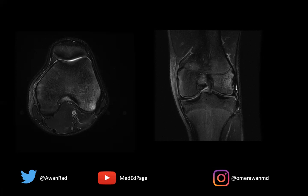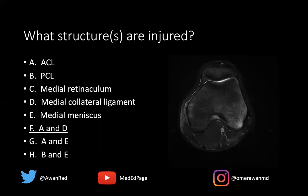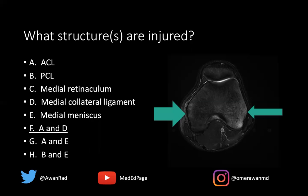You should immediately recognize that this is a clip injury, and the ACL and the medial collateral ligament are going to be torn or injured. So the best answer here is F — the ACL and the medial collateral ligament. These are nice examples of microtrabecular contusions, which are essentially microtrabecular fractures or microtrabecular injuries without a discrete fracture line.